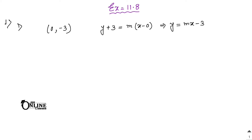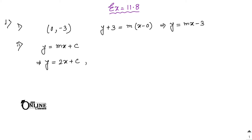Number two: with slope 2. As you know, y = mx + c is the general equation. So if slope equals 2, then y = 2x + c, where c is the parameter.